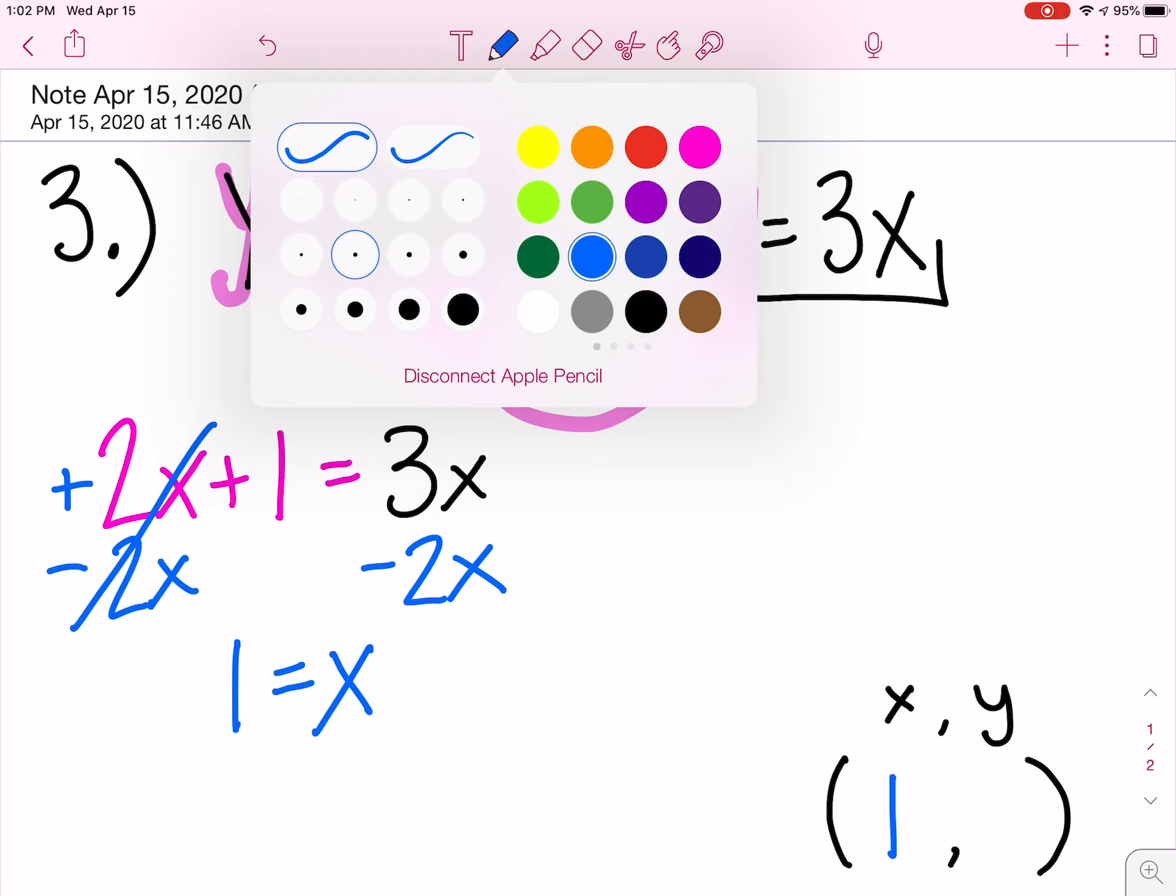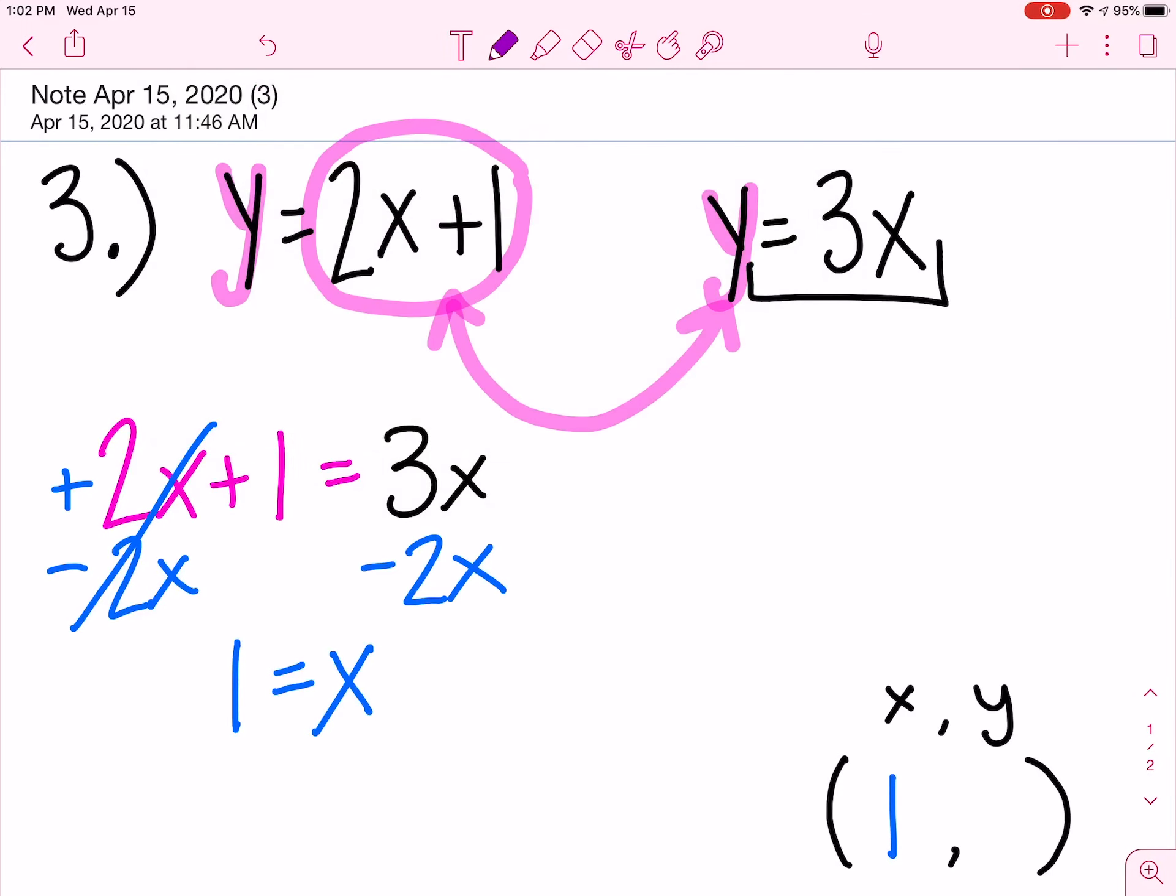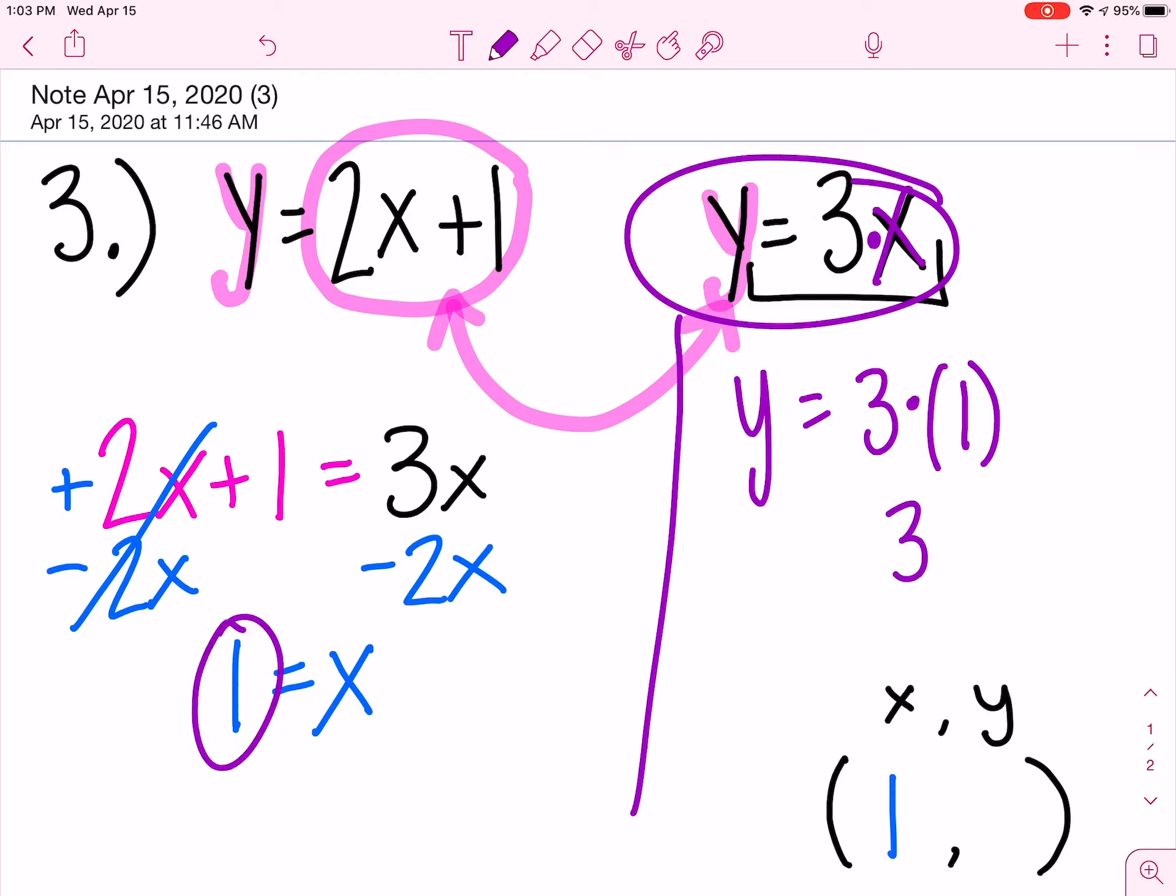Now using purple, I can choose either equation. I think this one looks way faster. To find out what y is, 3 times x, but instead of x, it is 1. 3 times 1 is 3.